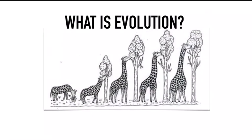Millions of years ago, the giraffe used to have a short neck, and it used to eat grass and small plants. But when the grass and small plants were finished, the giraffe saw that if its neck was longer, it could eat the leaves of trees.